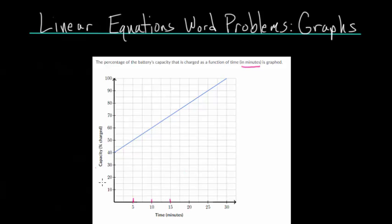And this vertical axis here focuses on the capacity, or the percent charged. So it looks like at 0 minutes, it is at 40% charged. And as time goes on, the charge increases in a linear fashion, because it's not curving here. It's just going up in a straight line. And it looks like at 30 minutes that the battery will reach 100% capacity, or 100% charge.